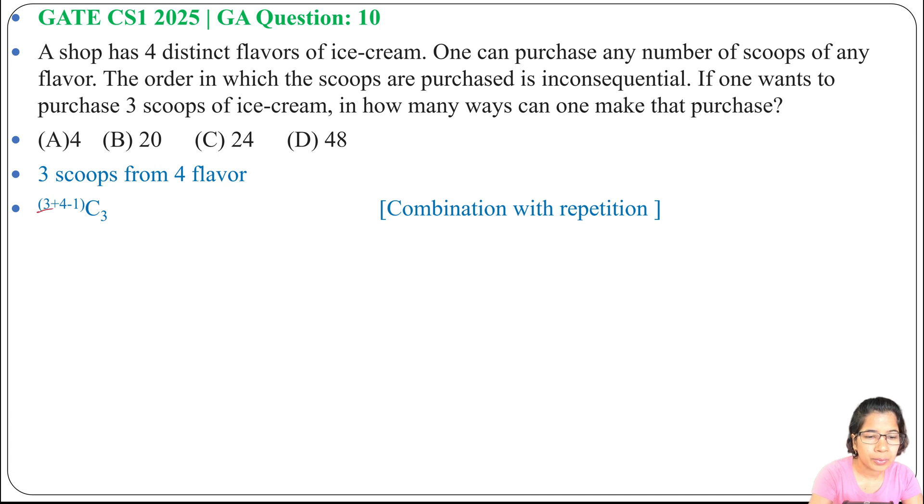Three scoops from four flavors, that's why 3 plus 4 minus 1, and we are choosing three scoops. So total four from that three we are choosing, minus one here, it's three. So 3 plus 4, it's 7 minus 1, 6. C(6,3).